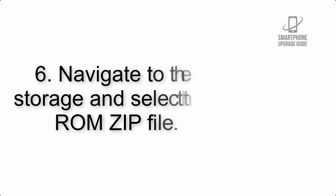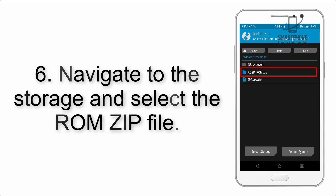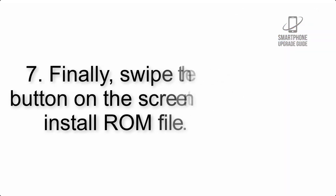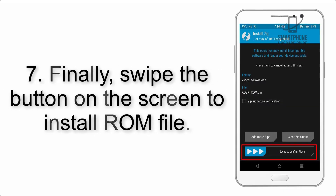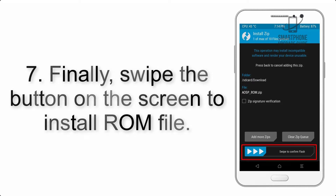Step 6: Navigate to the storage and select the ROM zip file. Step 7: Finally, swipe the button on the screen to install the ROM file.